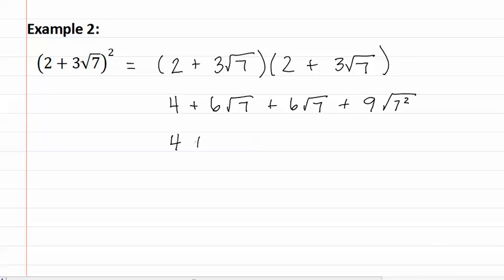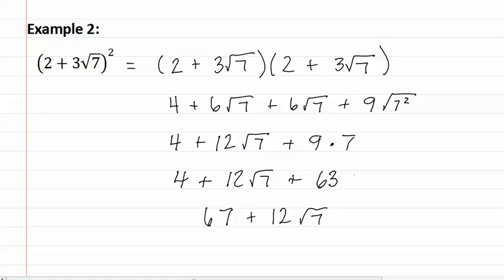We bring down the four but then we can combine the middle two terms to make twelve square root seven, remember we just add them. And finally we get plus nine times seven, because the seven comes out. This gives us four plus twelve square root seven plus sixty-three, which results in sixty-seven plus twelve square root seven. This is our final answer.